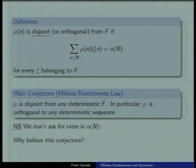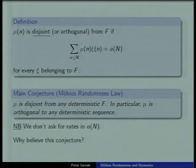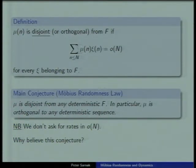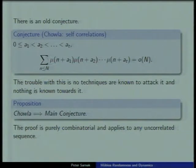My colleague Elon Lindenstrauss kept telling me he had counterexamples to what I'm about to state — he was giving me worse and worse examples of dynamical systems with zero entropy that look like they have positive entropy for long periods but eventually have zero entropy. I was quite nervous about this for a year or two. But I want to emphasize: I'm not asking for rates, and that's absolutely critical. There's another conjecture which implies this one — a purely information-theoretic combinatorial statement — that makes you quite comfortable about the Möbius Randomness Conjecture.